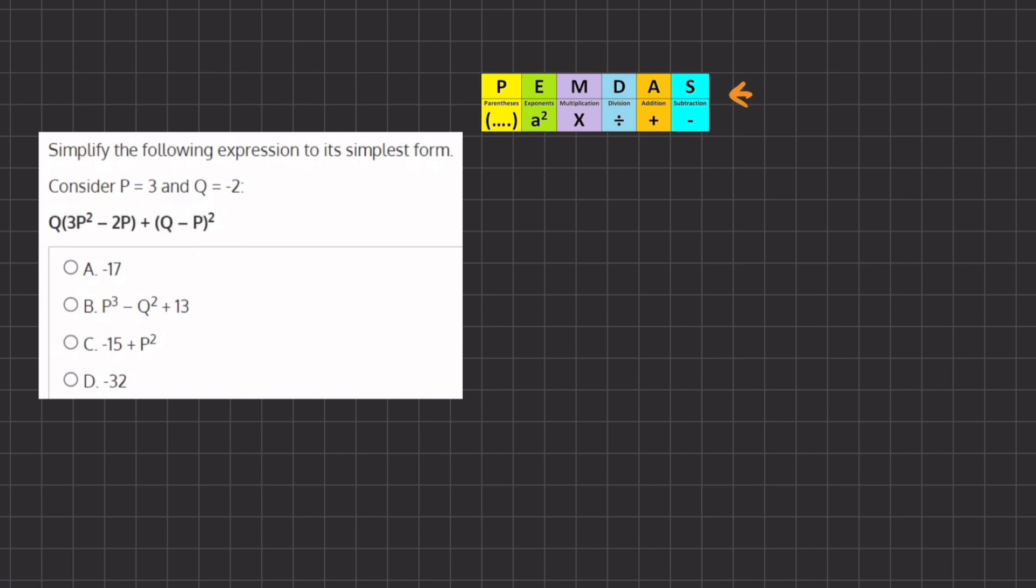Let's begin by plugging in the values of P and Q that are given to us. Our equation is going to look like this. Instead of Q, we have negative 2. We have our parentheses 3 times P, which is 3 to the power of 2, minus 2P, which is 2 times 3, and we'll close our parentheses.